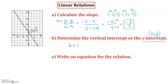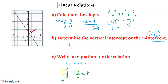The y-intercept is 1. We write b = 1, where b is the symbol for the y-intercept. The equation of the line is y = mx + b. Substituting our values, the slope is -3/2 and b = 1, so the equation is y = -3/2x + 1. That's how we calculate the slope, find the y-intercept, and write the equation of a line.